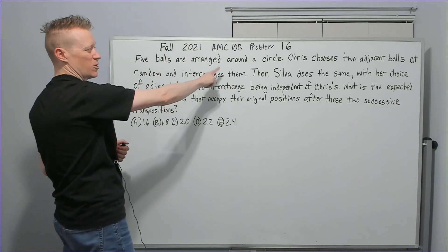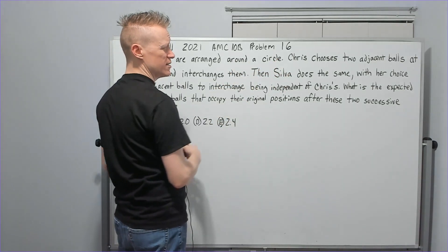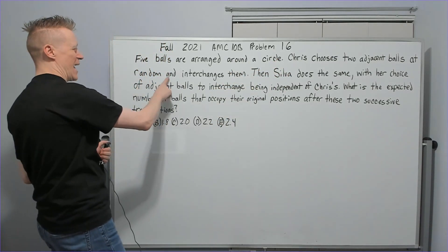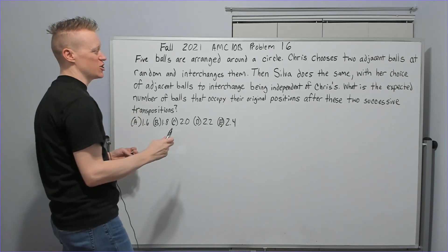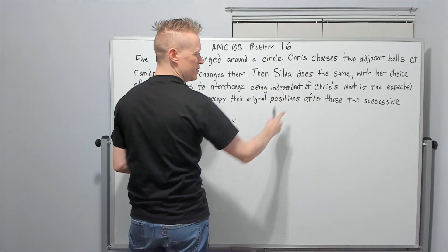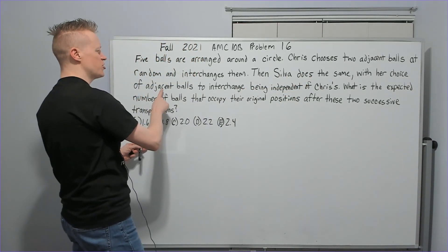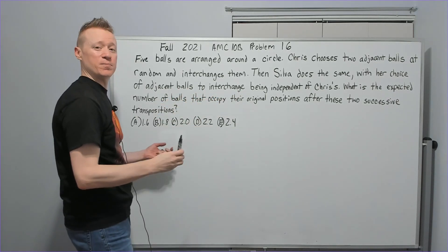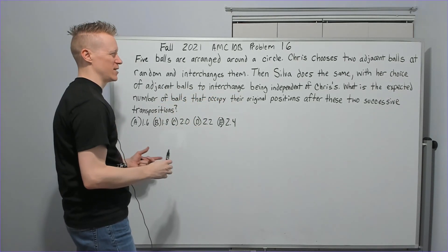Five balls are arranged around a circle. Chris chooses two adjacent balls at random and interchanges them. Then Silva does the same with her choice of adjacent balls to interchange being independent of Chris's.